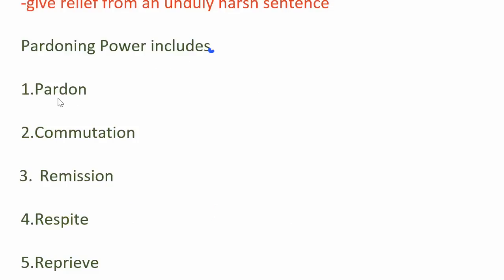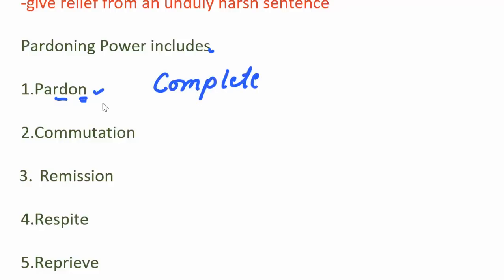This pardoning power includes, first, pardon. In pardon, a convict is completely absolved from both the sentence as well as the conviction. Keep the keyword here: complete. This keyword will help us remember the meaning of pardon — there is complete absolvation from both conviction and sentence.